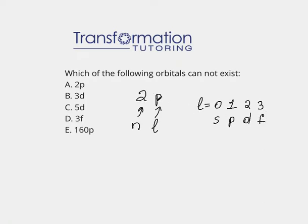For example, for 2p, we know that our n number is equal to 2, and our l number, since it's p, p is 1, so l must be equal to 1. So n is equal to 2, and l is equal to 1.